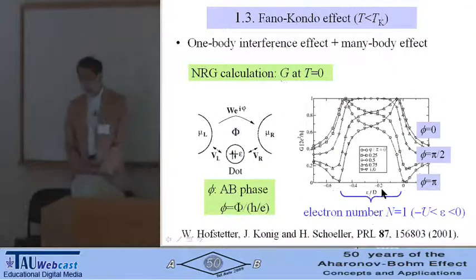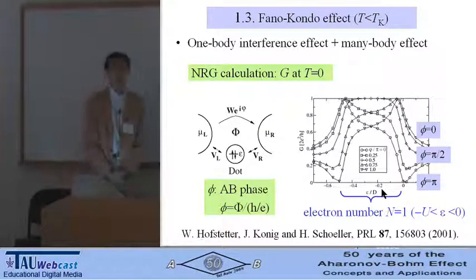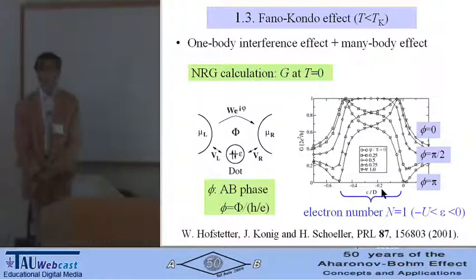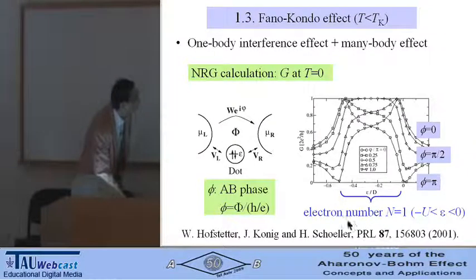In the presence of the Kondo effect, we have one-body interference effect, Fano effect, and also many-body resonant effect, Kondo effect. This is the theoretical result by Hofstadter and co-workers using this model.